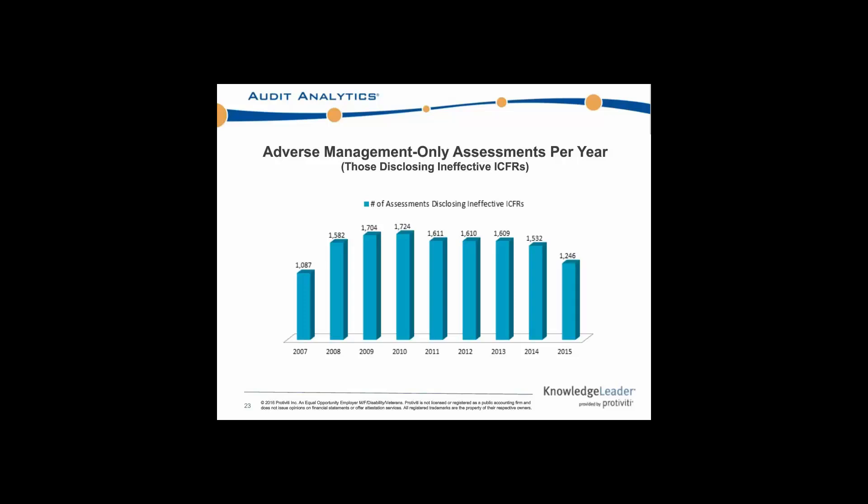There is a slight drop-off in 2015 in terms of these total management-only assessments. Now that we've seen those numbers, the polling question is: what year by percentage had the highest total of adverse management-only assessments for ICFRs? Is it 2008, 2010, 2012, or 2014? Go ahead and take a minute or so to answer this.